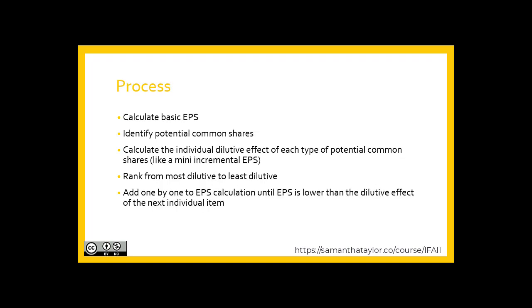The process starts with calculating basic EPS as shown in Topic 1. Then you identify all potential common shares, or PCS, and calculate the individual dilutive effects of each type — sort of like mini incremental EPS.